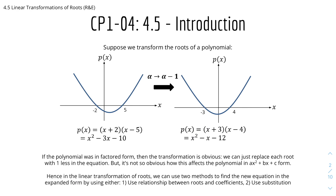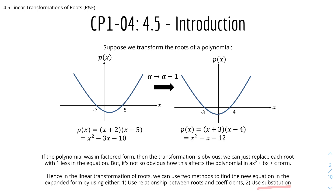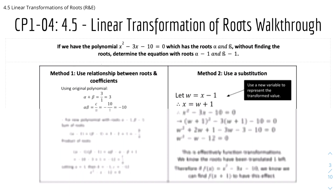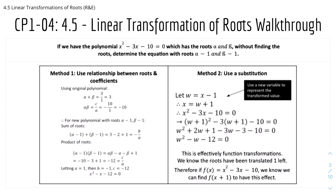The two methods are: using the relationship between roots and coefficients, or using substitution. We'll look into both, starting with a walkthrough example. Suppose we have the polynomial x² - 3x - 10 = 0, which has roots alpha and beta. Without finding the roots, determine the equation with roots alpha minus 1 and beta minus 1.